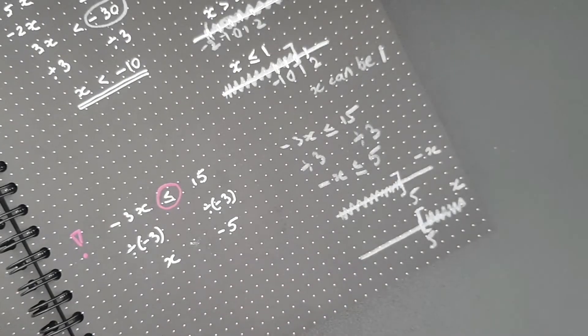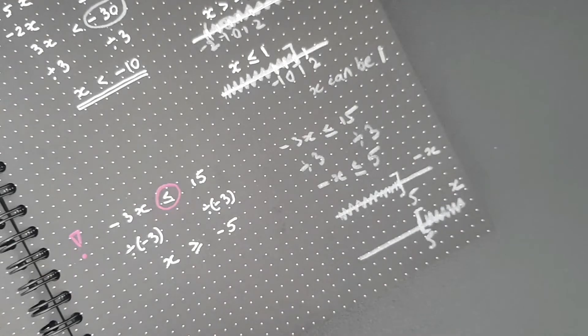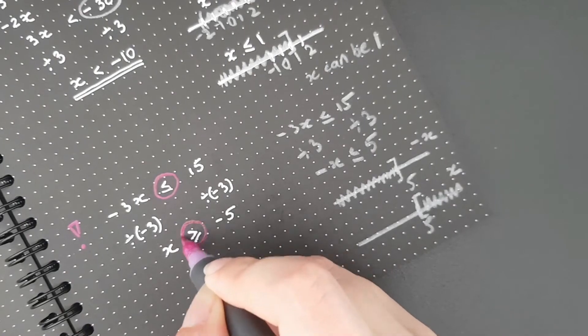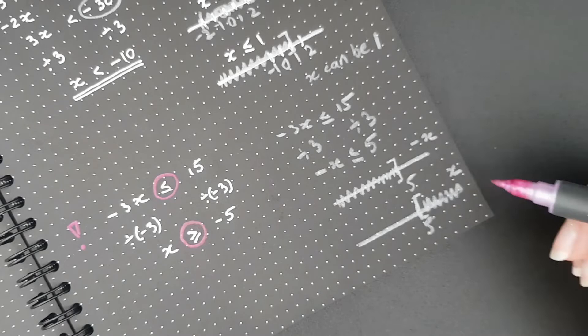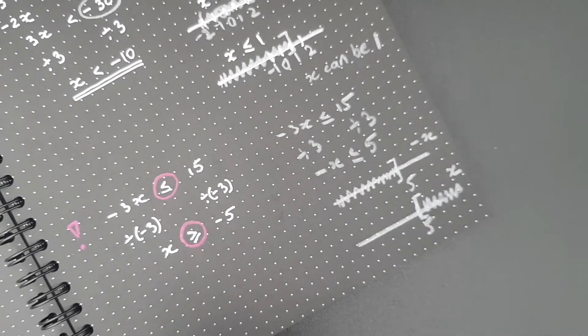So the direction of the inequality changes. It just goes the other way. And it comes from understanding what's happening here and the difference between the negative x and the x when it comes to inequalities like that.